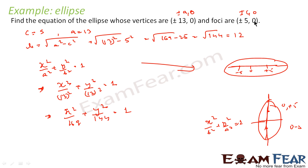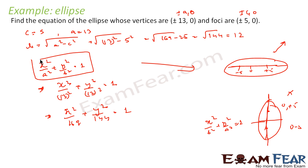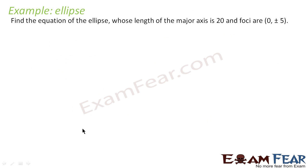We found the value of b, and then based on the foci being on the x-axis, we concluded the ellipse is of the form x²/a² + y²/b² = 1, and we wrote the equation accordingly.